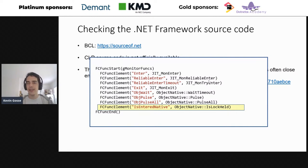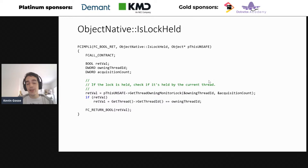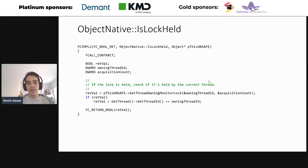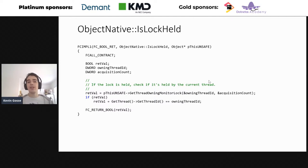I looked at the source code of IsLockHeld. If you're not used to reading CLR source code, it can be a bit scary because there are macros everywhere, and it's C++. But the function isn't doing much. It takes only one parameter — the object used for the lock — then calls GetThreadOwningMonitorLock, which checks what thread is currently owning the lock. If it finds one, it checks if the ID of that thread matches the ID of the current thread, and returns true or false accordingly. This is pretty much what we expect Monitor.IsEntered to do.